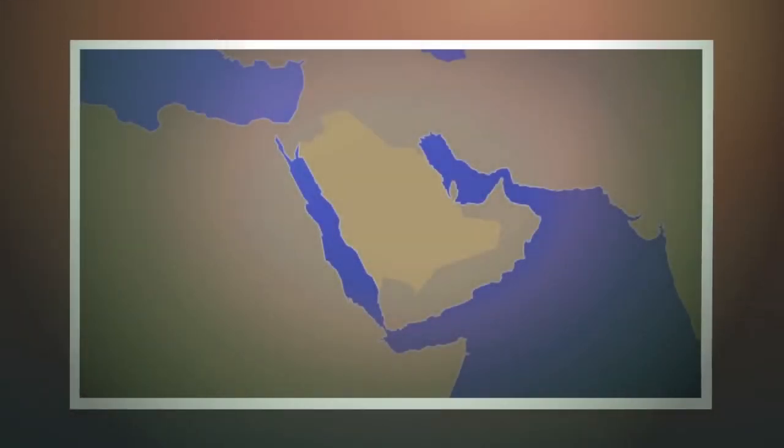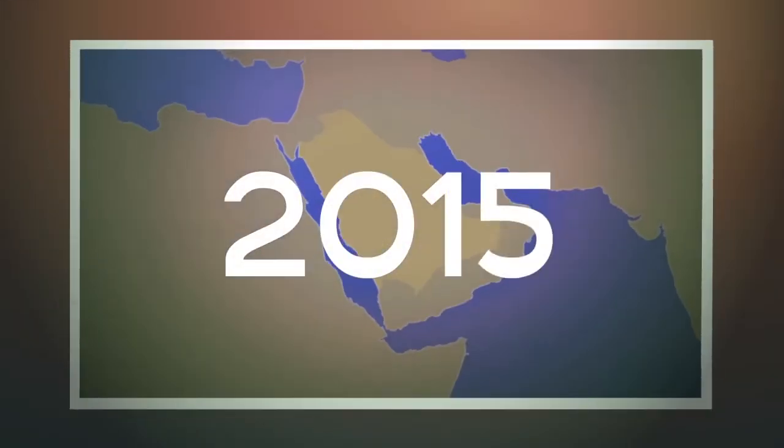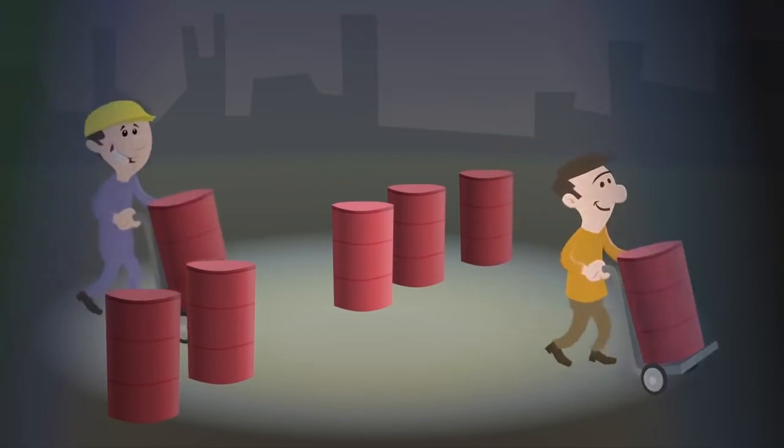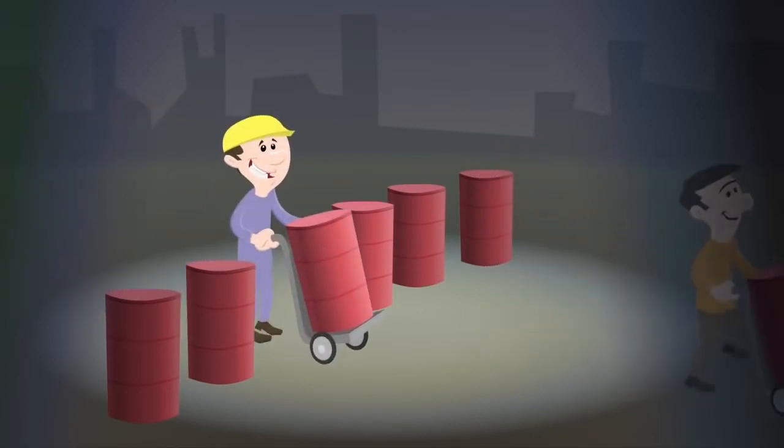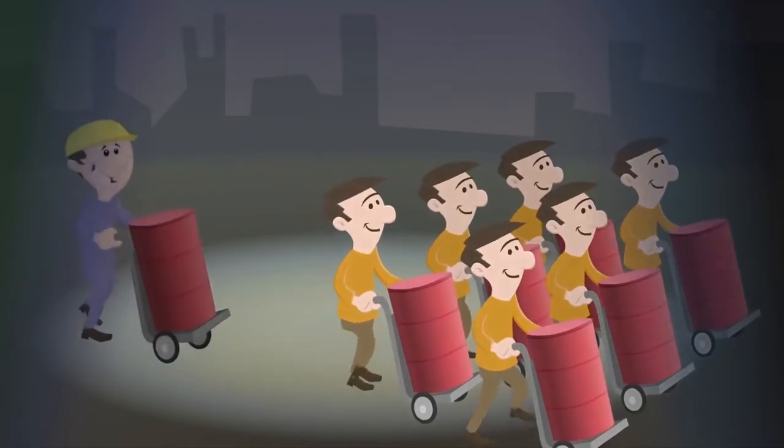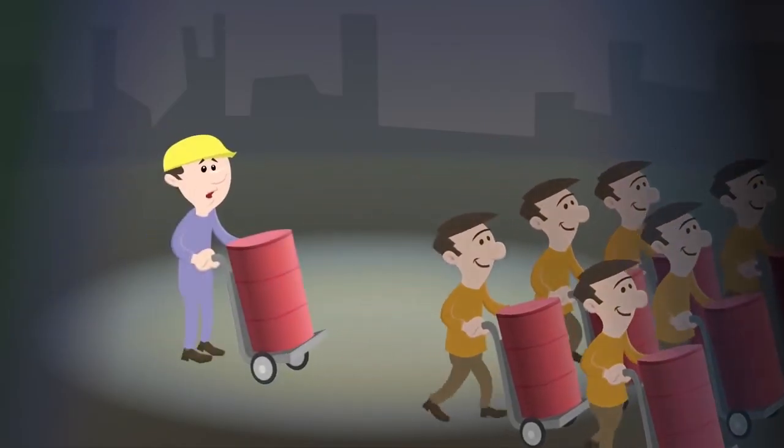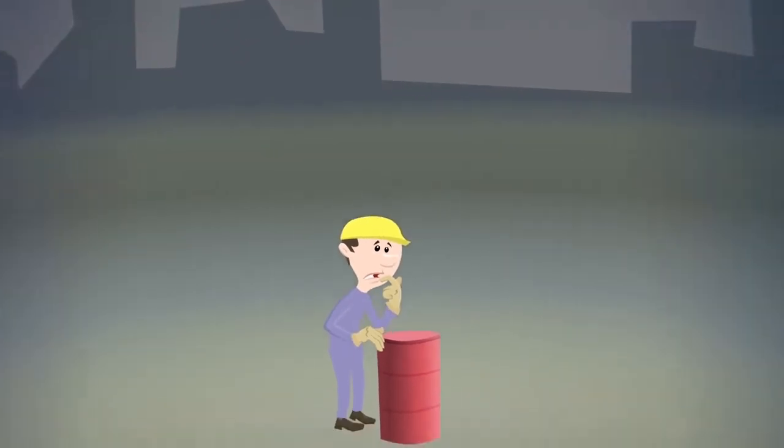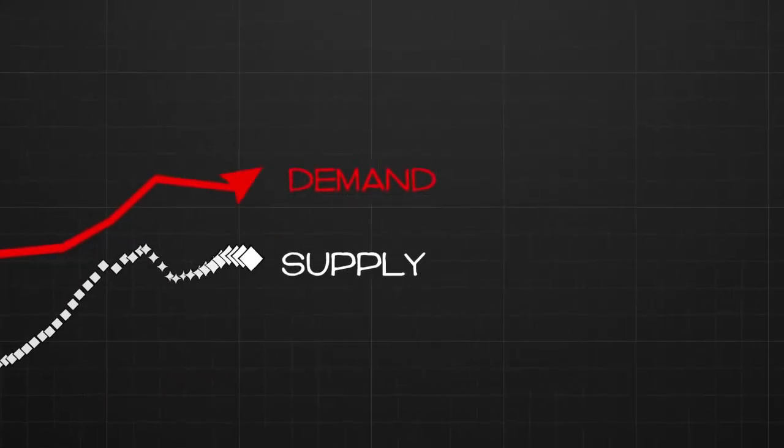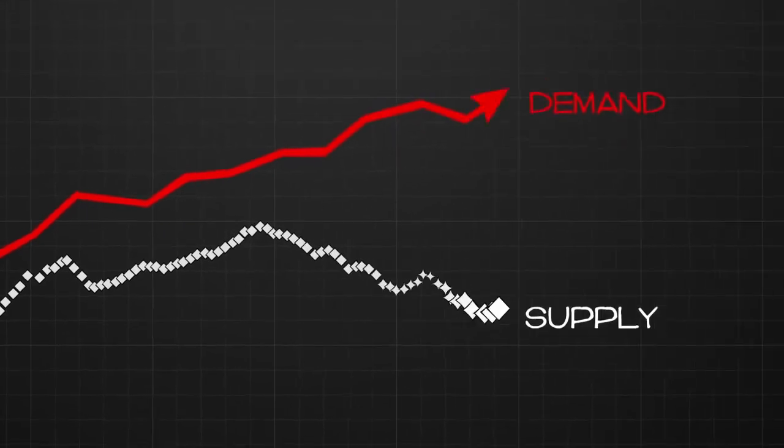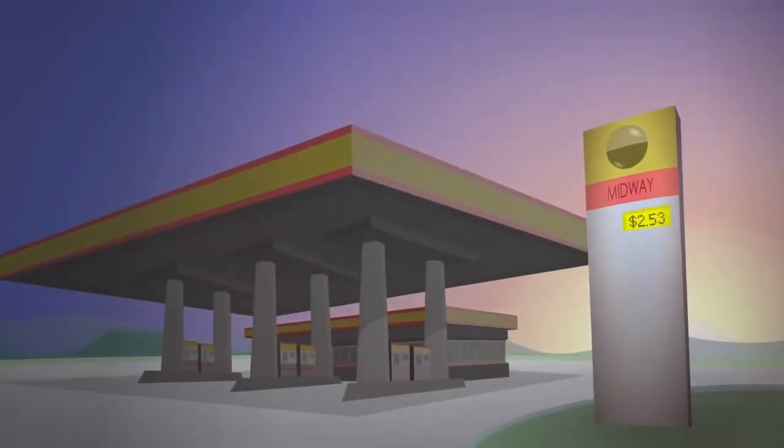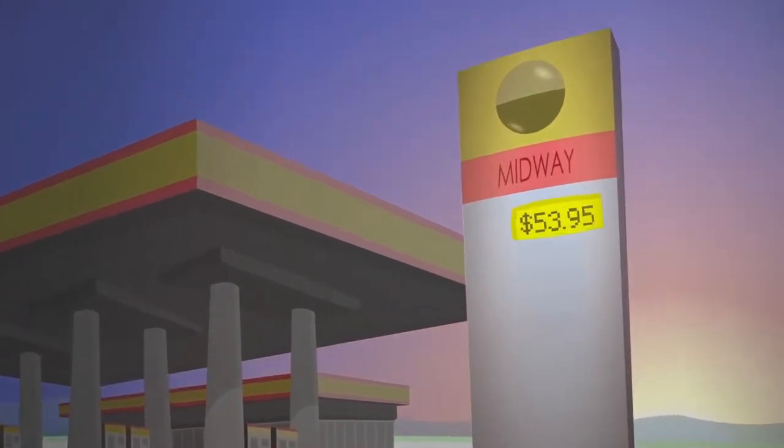The world will need to bring the equivalent of a new Saudi Arabia into production every three years to make up for declining output in existing oil fields. In the 1960s, six barrels of oil were found for every one that was used. Four decades later, the world consumes between three and six barrels of oil for every one that it finds. Once the peak of world oil production is reached, demand for oil will outstrip supply and the price of gasoline will fluctuate wildly, affecting far more than the cost of filling a car.